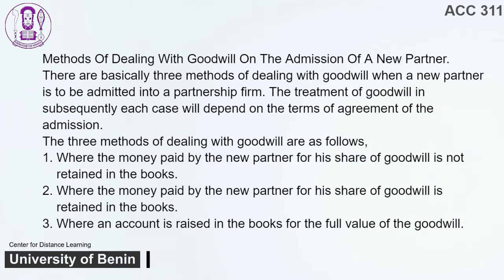Methods of Dealing with Goodwill on the Admission of a New Partner. There are basically three methods of dealing with goodwill when a new partner is to be admitted into a partnership firm. The treatment of goodwill in each case will depend on the terms of agreement of the admission. The three methods are: 1. Where the money paid by the new partner for his share of goodwill is not retained in the books. 2. Where it is retained in the books. 3. Where an account is raised in the books for the full value of the goodwill.